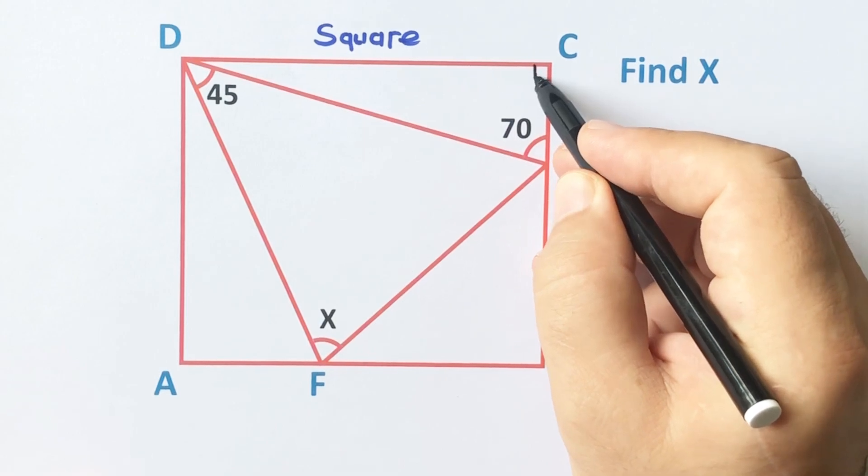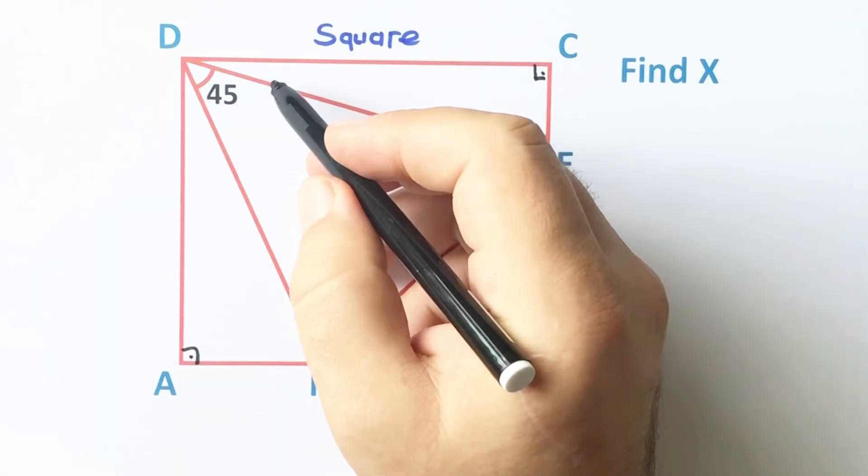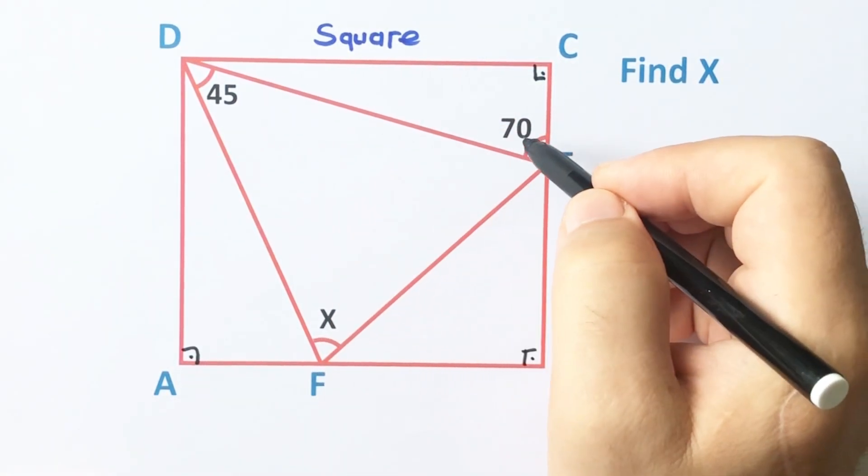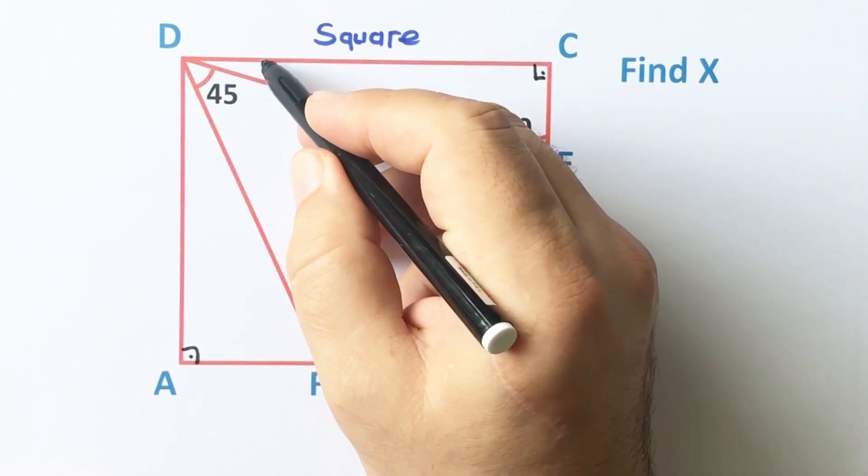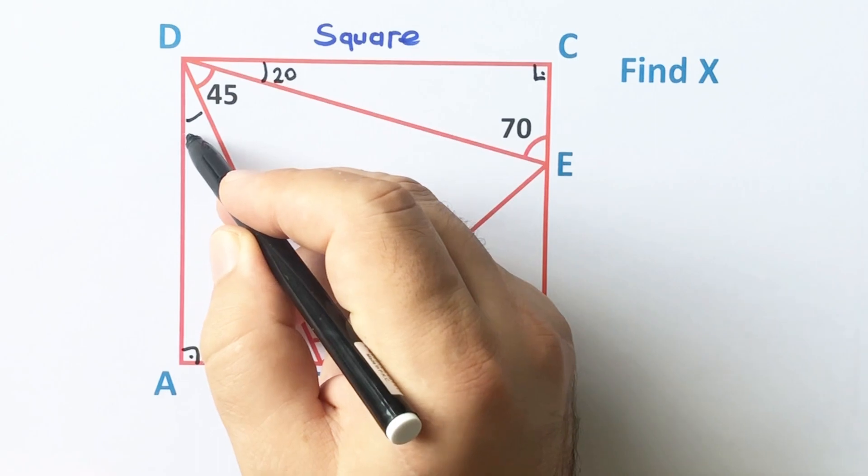First of all we know that these are 90 degrees, and the sum of the interior angles equals 180 degrees. Therefore here must be 20 degrees and this angle must be 25 degrees.